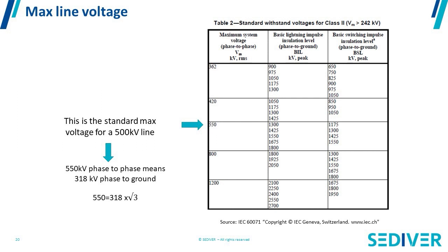When you look at the standards, there is a classical table used worldwide that gives lightning impulse and switching impulse requirements for a given voltage. For a 500 kV line — which by standard rules has a maximum voltage of 550 kV — you see different options for basic lightning impulse and basic switching impulse. You choose a value that fits your insulation coordination between the line and the substation. For example, a 550 kV line may have a lightning impulse withstand of 1,525 kV and a switching of 1,405 kV.